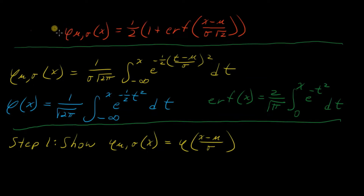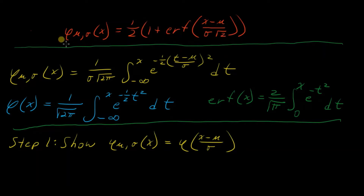If you've had statistics, you may have seen something like this in class, where if you have the cumulative density function — with which we calculate probabilities from a z-score — that's equal to this relationship here with what we call the error function. I'm using the Greek letter phi here, so if it looks weird, don't let it confuse you. It's kind of standard to use it, often capitalized, but I prefer lowercase.